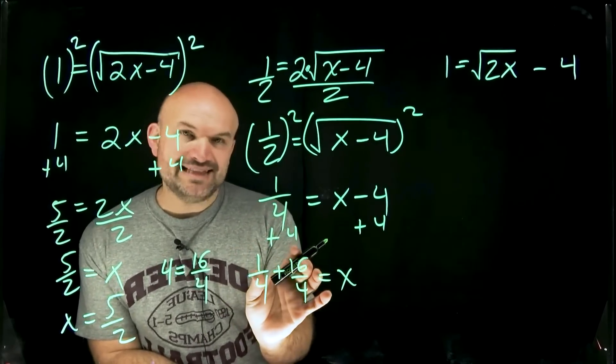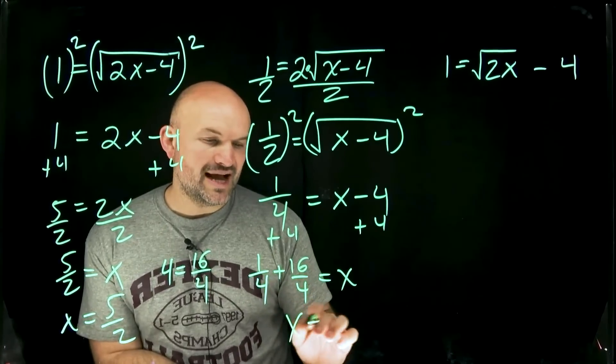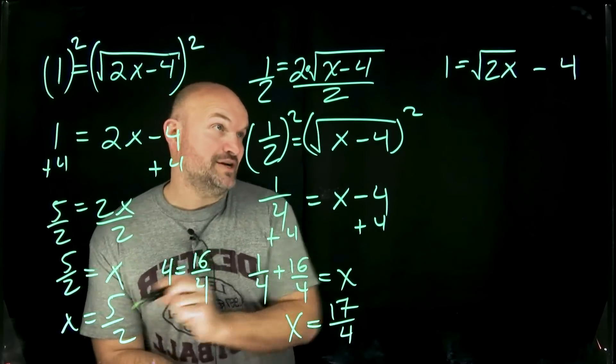Now I know I can add these two fractions. Since they have the same denominator I can add the numerators so therefore x is going to equal 17 over 4. Definitely not the same solution as we had over here.